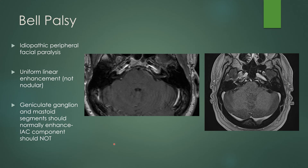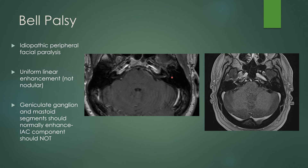Bell's palsy is another indication for IAC imaging. This is idiopathic peripheral facial paralysis. What you expect to see is uniform linear enhancement within the IAC — not nodular enhancement. The geniculate ganglion and mastoid segments of the facial nerve do normally enhance, but the IAC component should never enhance. If you see enhancement within the IAC, always consider it abnormal.